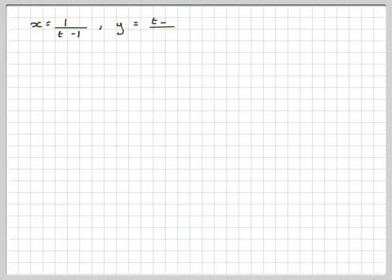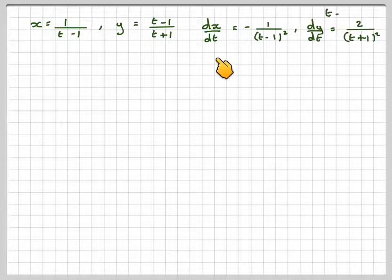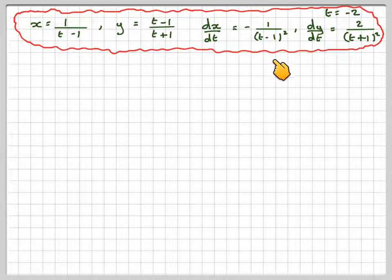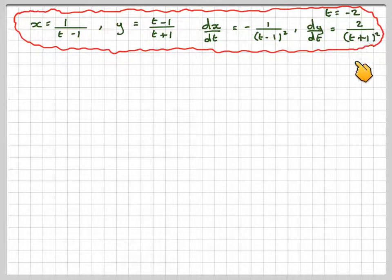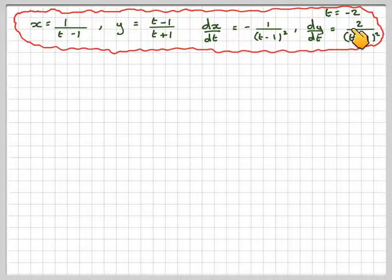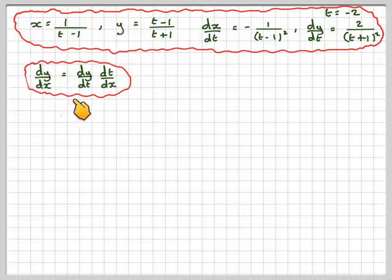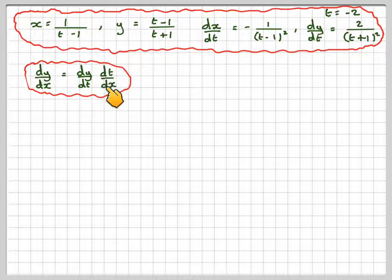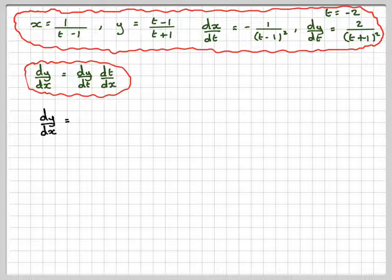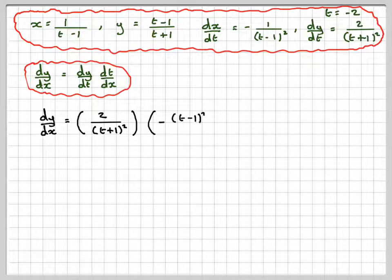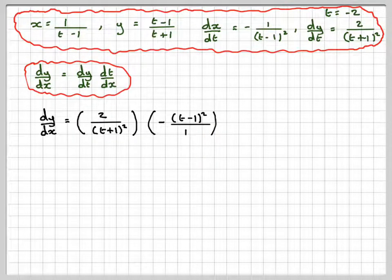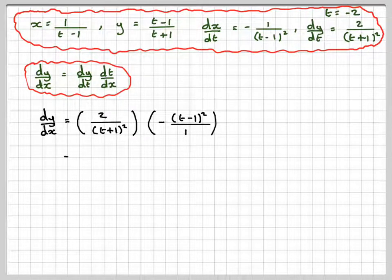So we have x is 1 over t minus 1, y is t minus 1 over t plus 1, dx dt is minus 1 over t minus 1 all squared, and dy by dt is 2 over t plus 1 squared, where t is minus 2. And we know that dy by dx is dy by dt times dt by dx, so it's going to be 2 over t plus 1 all squared times minus t minus 1 squared over 1.